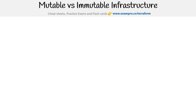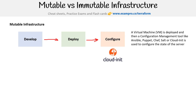We were just talking about immutable infrastructure, but I just want to give it a bit more attention here. We are going to first develop our infrastructure as a code file — Terraform, CloudFormation, what have you. And then we're going to go ahead and deploy that, so we'll end up with our own virtual machine. A virtual machine needs to be configured: install packages and things like that. That's where cloud-init would come into play — Ansible, Puppet, Chef, Salt — whatever configuration management tool you want to use.